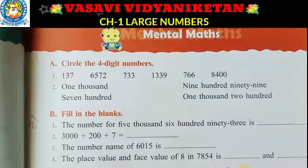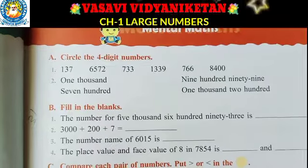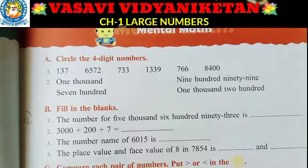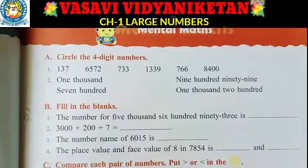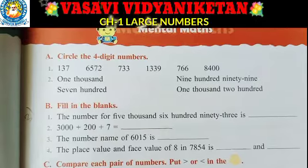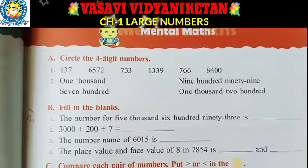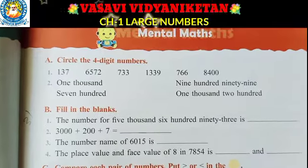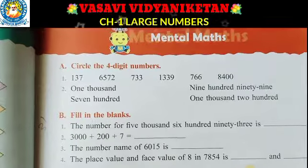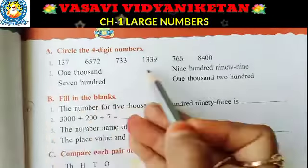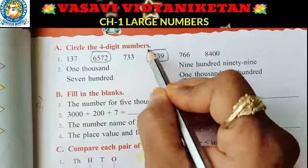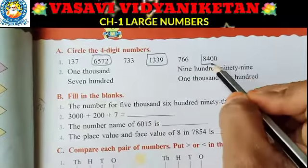See Nana, A Roman — circle the four-digit number. Here some digits are already given. We have to circle the four-digit number Nana. The numbers are: 137, 6,572, 733, 1,339, 766, 8,400. So we have to circle the four-digit numbers. See here — which ones are four-digit numbers? 6,572, 1,339, and 8,400.